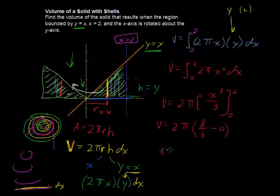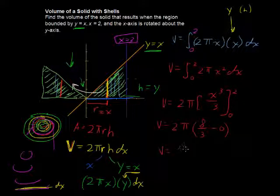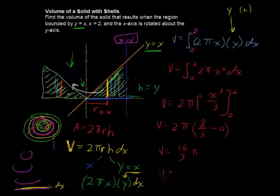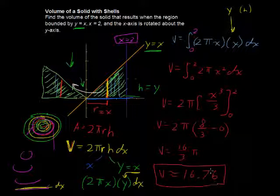Which for the fraction lovers of you, that is 16π/3, and for the decimal lovers of you, that is approximately 16.76. So, there is a nice example of finding the volume using shells.